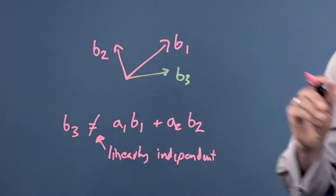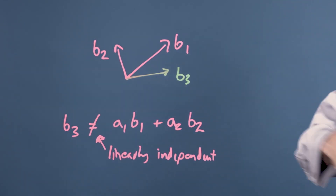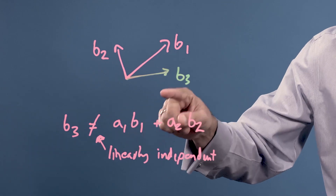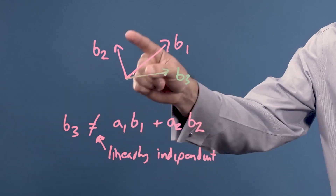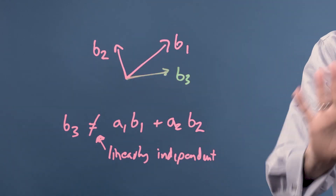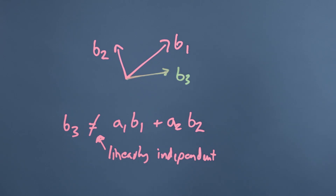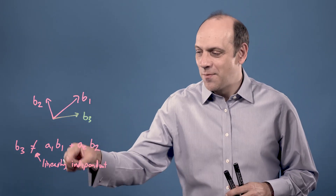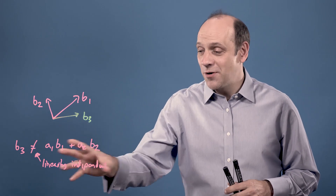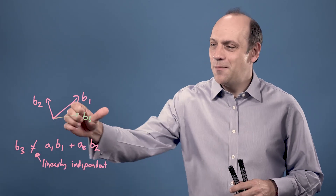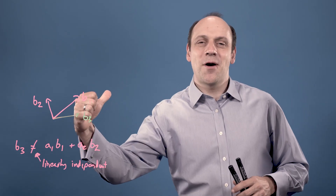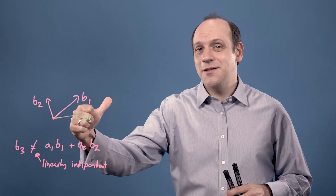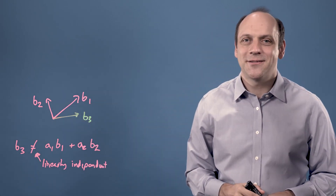If it is possible for me to find an A1 and A2 that satisfies that sum, then B3 is actually dependent on B1 and B2, and it lies in the same plane as B1 and B2. But if it's impossible for me to find an A1 and A2, B3 must have some component out of the board, so I can then use B3 to give me a three-dimensional space.